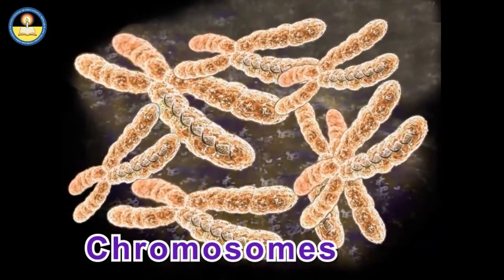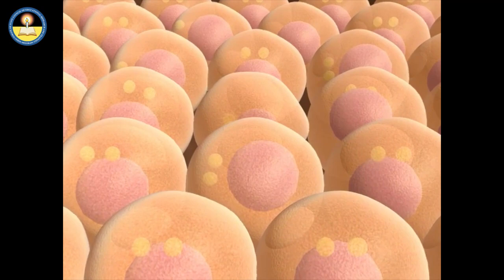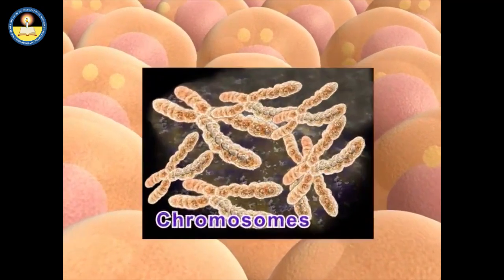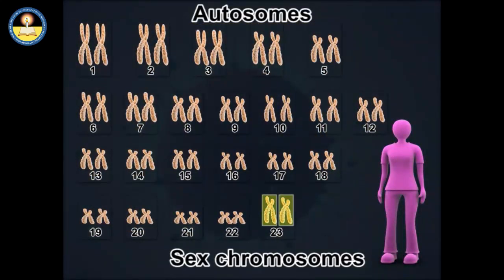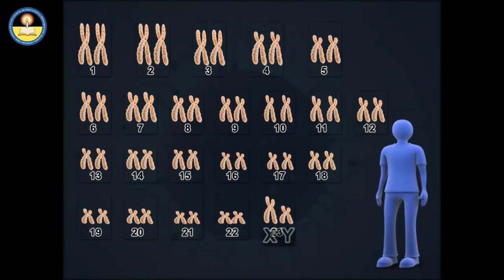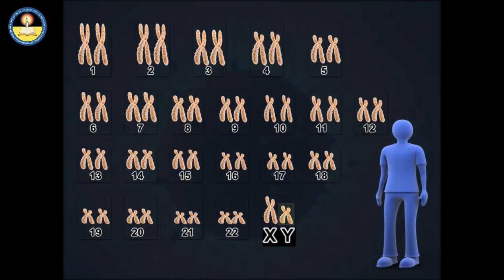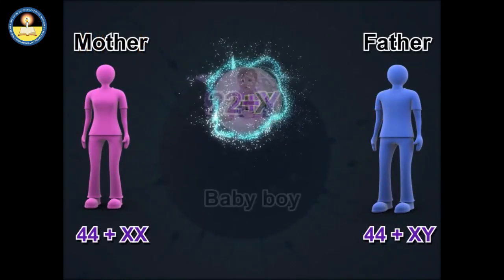These thread-like structures present in the nucleus of a cell are known as chromosomes. The nuclei of human cells contain 22 autosomes and 2 sex chromosomes. In females, the sex chromosomes are the 2 X chromosomes. The presence of the Y chromosome in the fertilized egg leads to a baby boy.